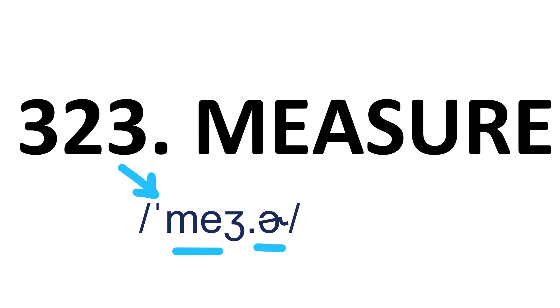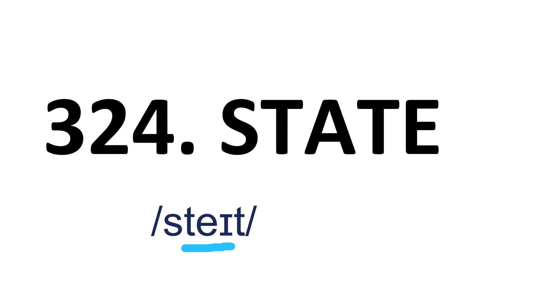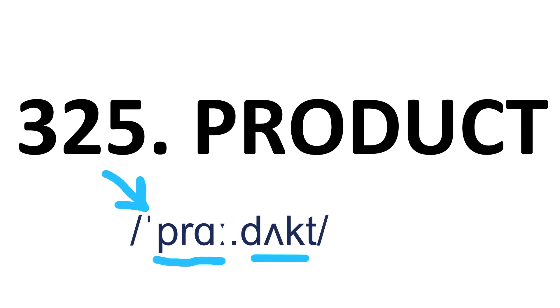Measure — it's a two-syllable word and stress is on the first syllable. Measure. Product — it's a two-syllable word and stress is on the first syllable. Product.